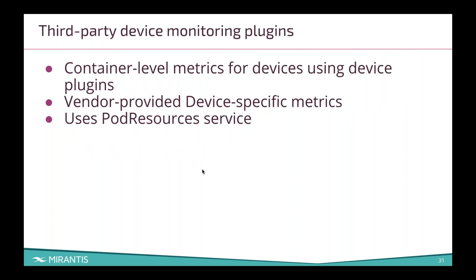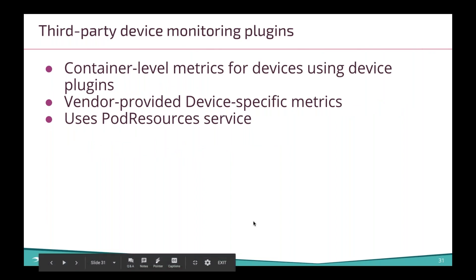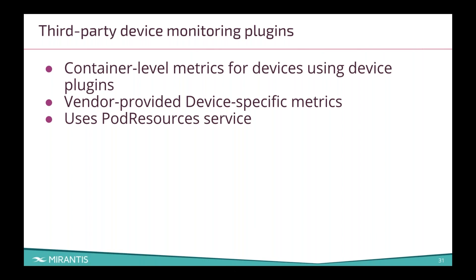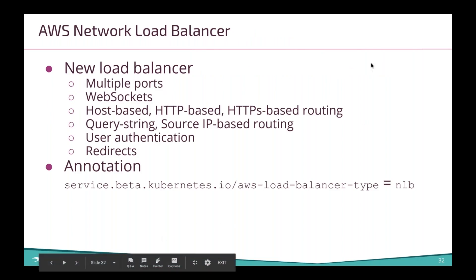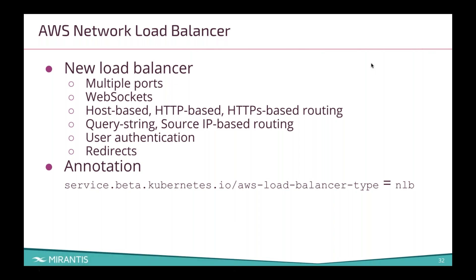Third-party device monitoring plugins. If you've got third-party devices hooked up, it would be nice to actually see what's going on — and now here it is. These are container-level metrics done through the device plugins, via the pod resources service. Finally, in beta, AWS has a new load balancer with features not available before, such as being able to use multiple ports and web sockets. To use it, you just need to set the load balancer type plugin annotation.